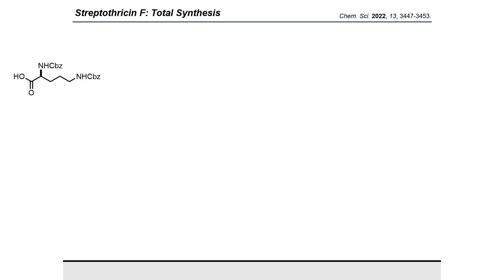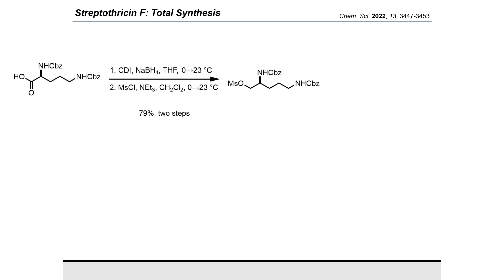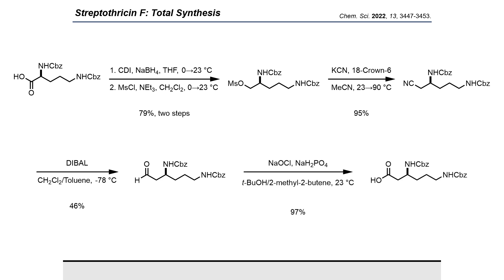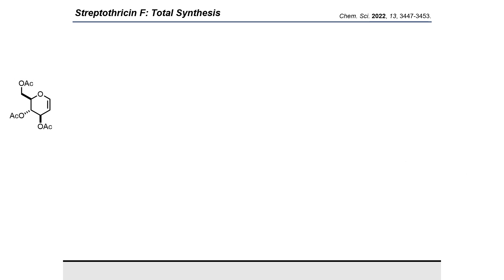Transitioning to the beta-lysine fragment, we start with Cbz-protected L-ornithine. Treatment with carbonyl diimidazole followed by sodium borohydride gave us the corresponding alcohol, which was used directly in the following mesylation. The resulting mesylate is then displaced with potassium cyanide. DIBAL reduction then gives us the aldehyde, and Pinnick oxidation brings that aldehyde up to a carboxylic acid. Over five steps we arrive at our protected beta-lysine.